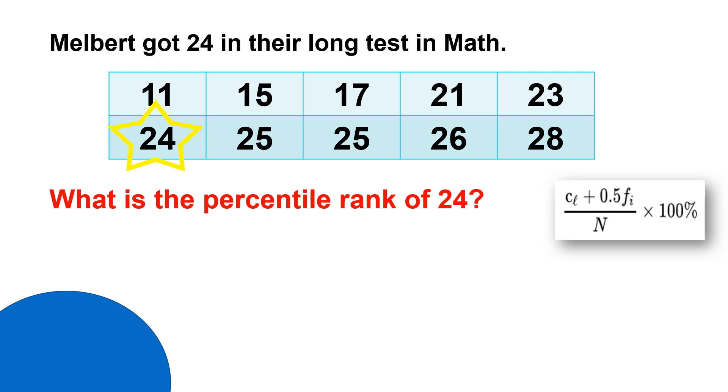Plus 0.5, that's given, and then the frequency of interest. The 24, how many times does it appear? In this example, just one. Then, divided by N, the total number of scores we have, that's 10, times 100%.